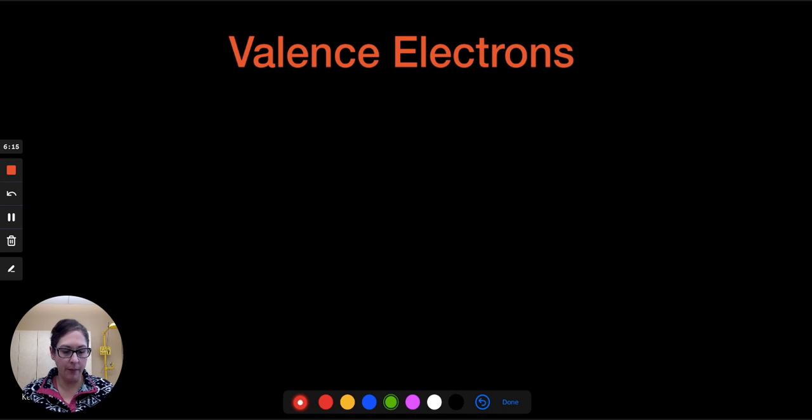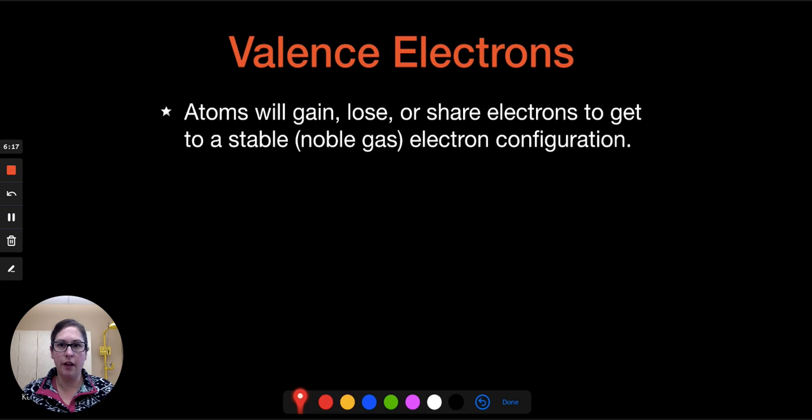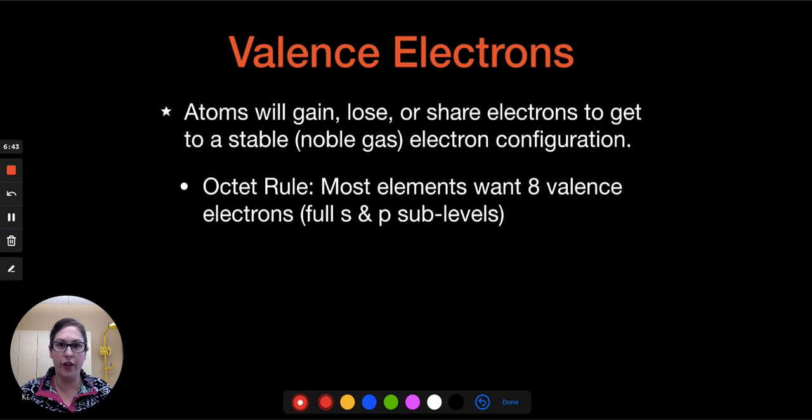So when it comes to bonding in valence electrons, atoms are going to gain, lose, or share electrons to get to a stable electron configuration, which is similar to a noble gas. So if the noble gas that they're trying to achieve is helium, then it would be 2 valence electrons. And if they wanted to be like the rest of the noble gases, then it's going to be 8 valence electrons. And so we have this rule called the octet rule.